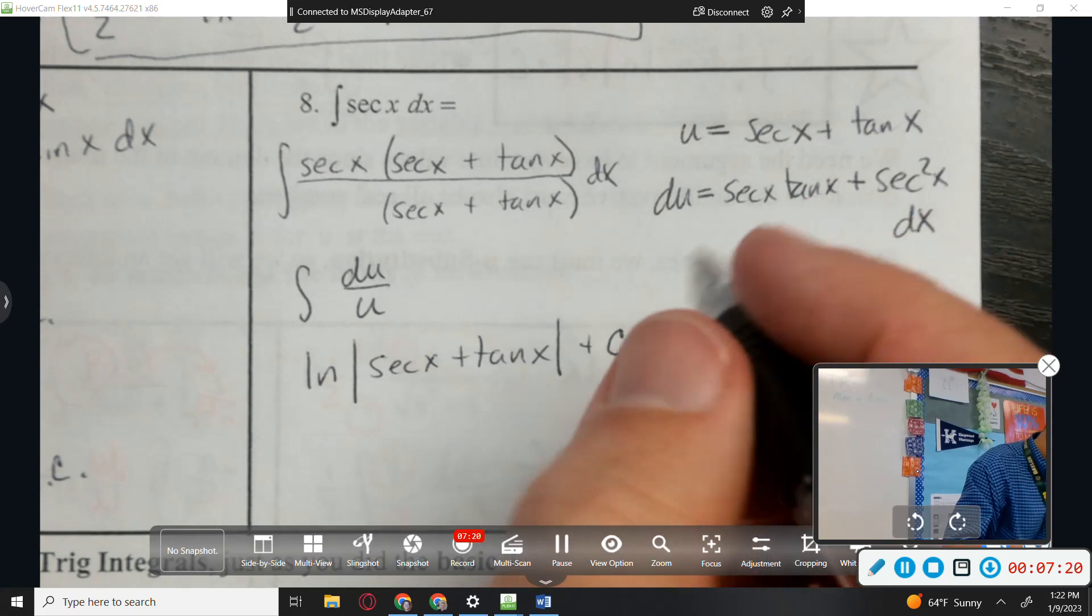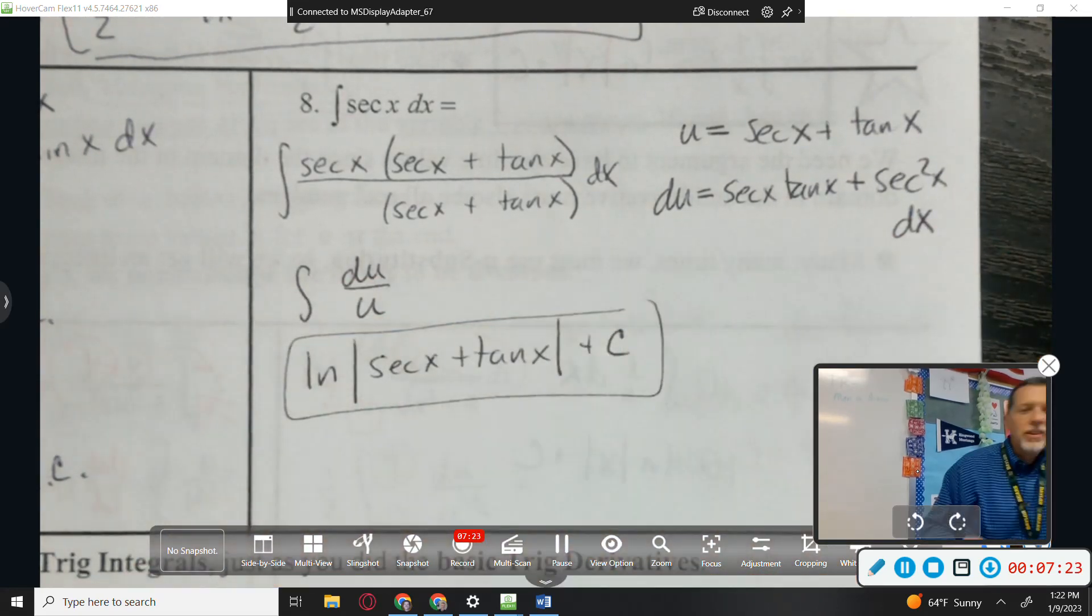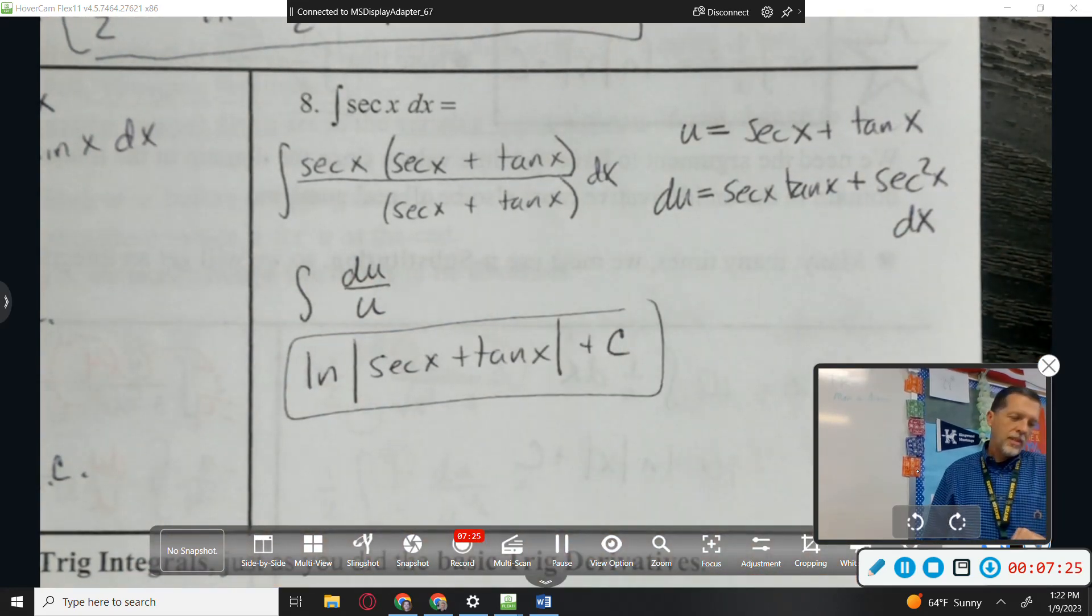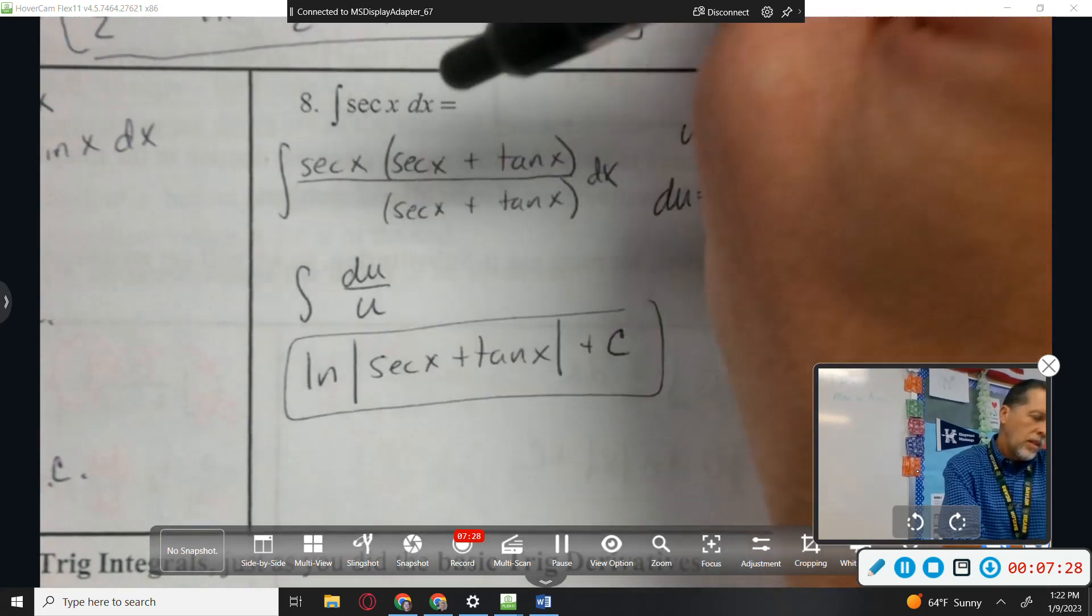It doesn't look like it, but if you distribute the secant and rearrange the order. Now, we've got du over u again. That looks like a bunch of problems. So, natural log of the absolute value of u, secant of x plus tangent of x plus c. Is there anything else we need to know about this? Not really.